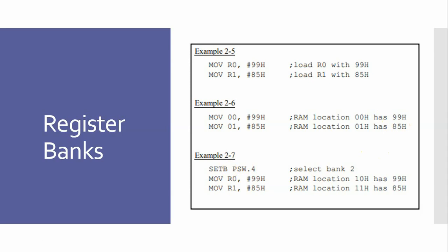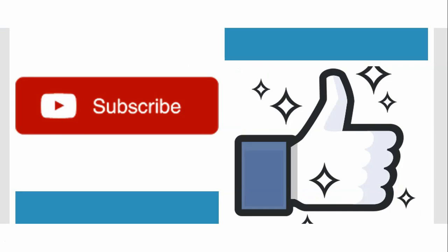In the last example, we first select a particular register bank by setting PSW bits so that bank 2 is selected. After that, we move 99 hexadecimal into R0 — but this R0 belongs to bank 2. Similarly, 85 hexadecimal is moved into R1 of bank 2, placing the value into the particular RAM location corresponding to register bank 2. Thanks for watching.